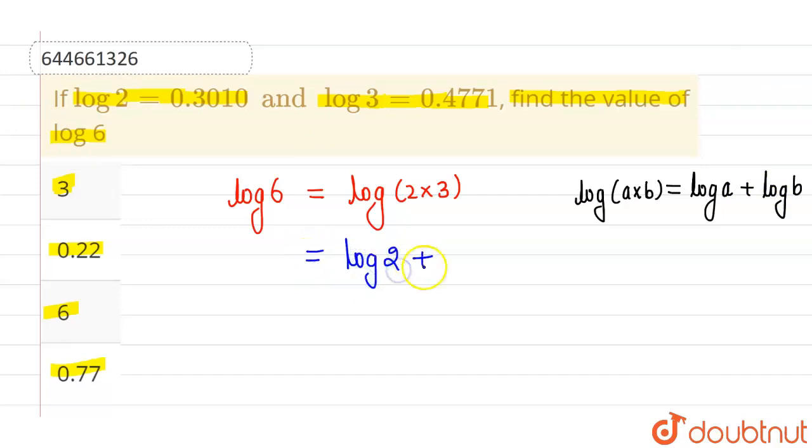By the same property we can say that log 2 into 3 can be written as log 2 plus log 3. Now again we know that the value of log 2 is 0.3010 and value of log 3 is 0.4771.